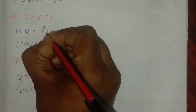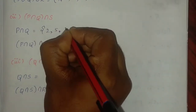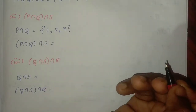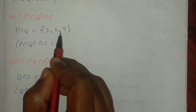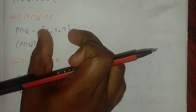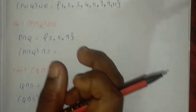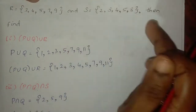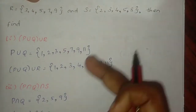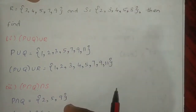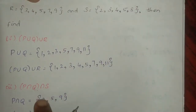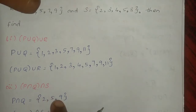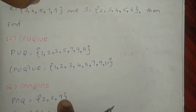So P intersection Q equals {2, 5, 9}. The common elements are 2, 5, and 9.